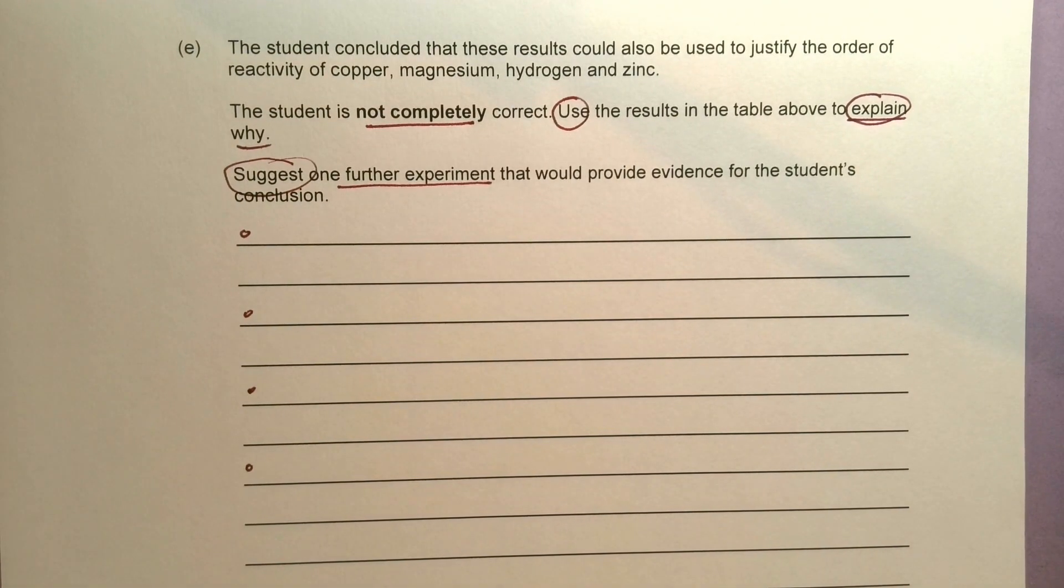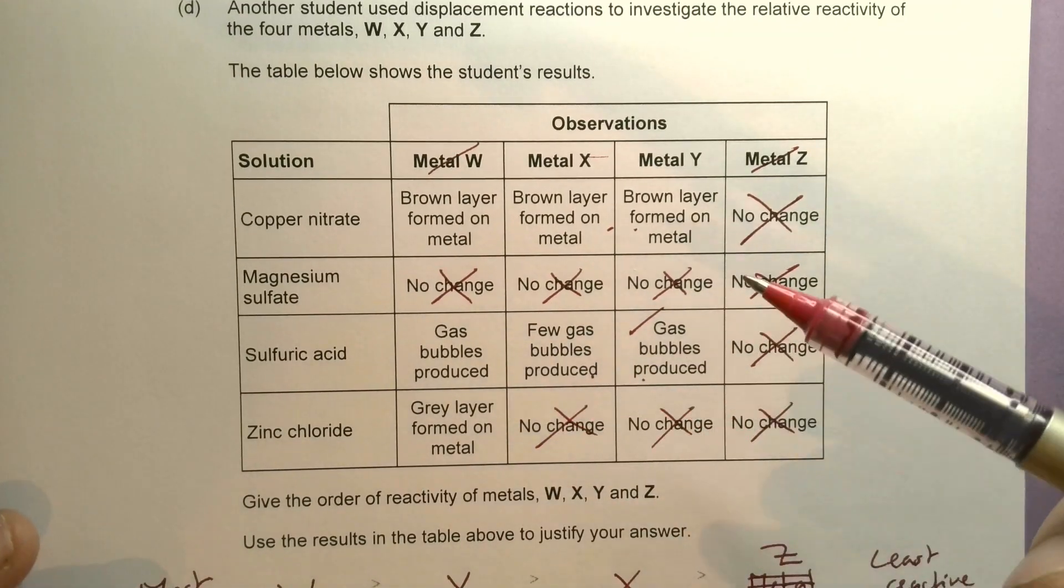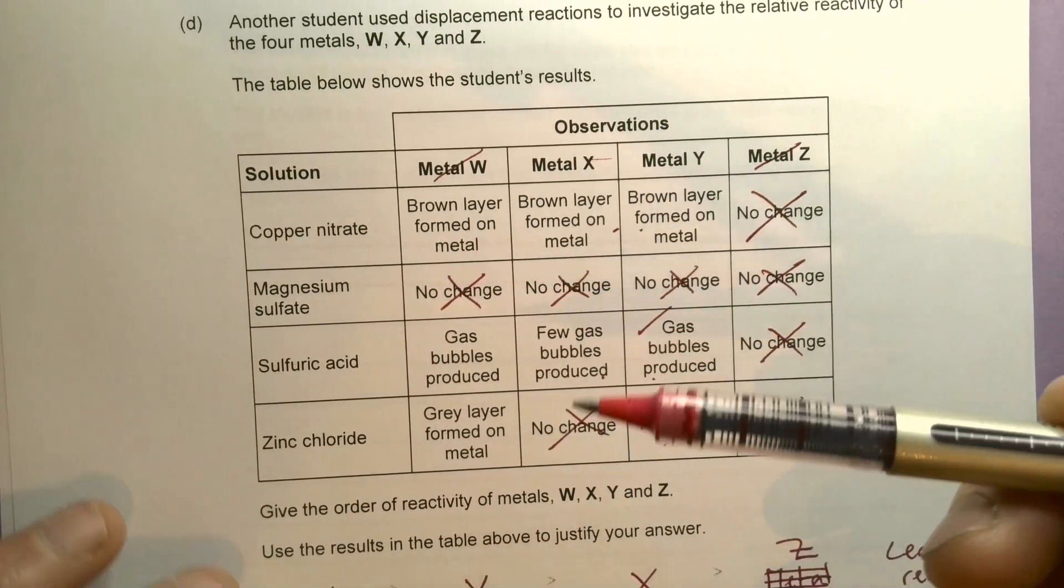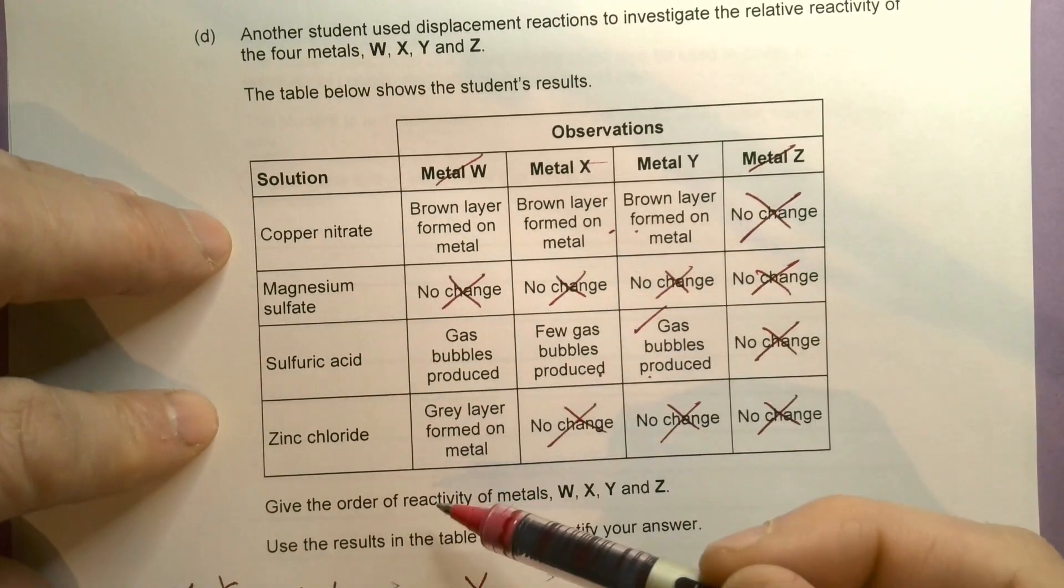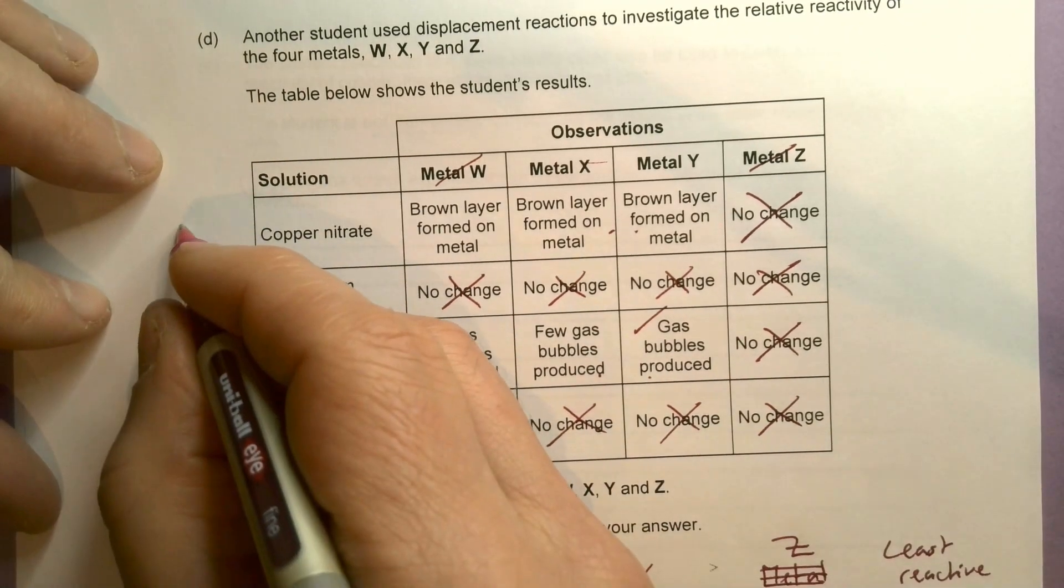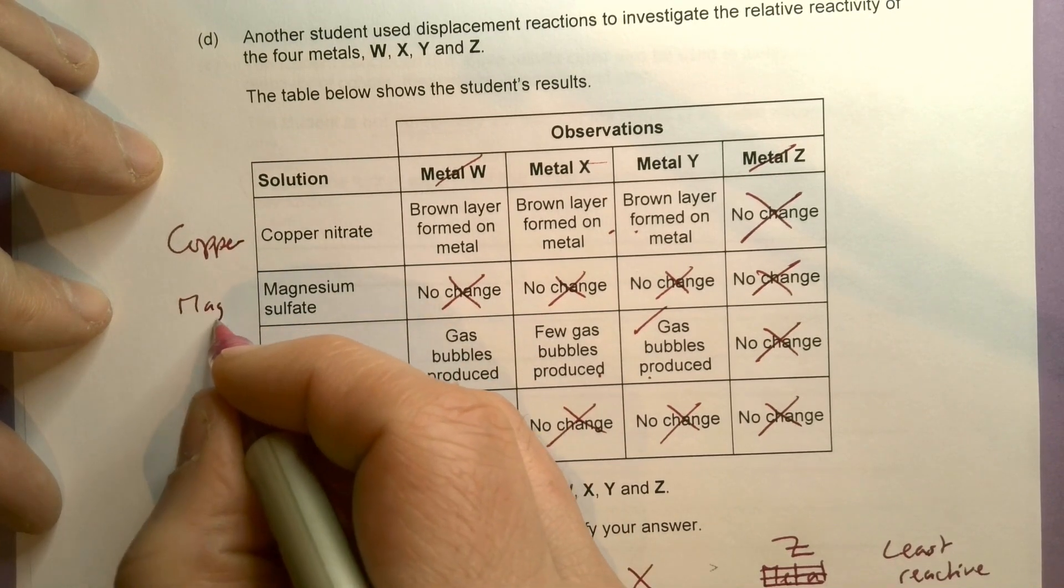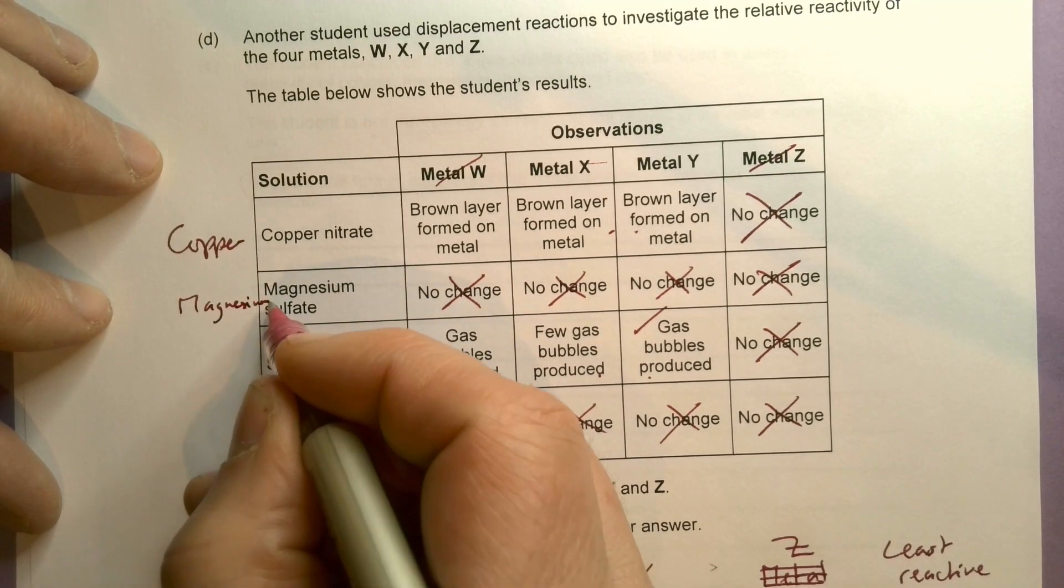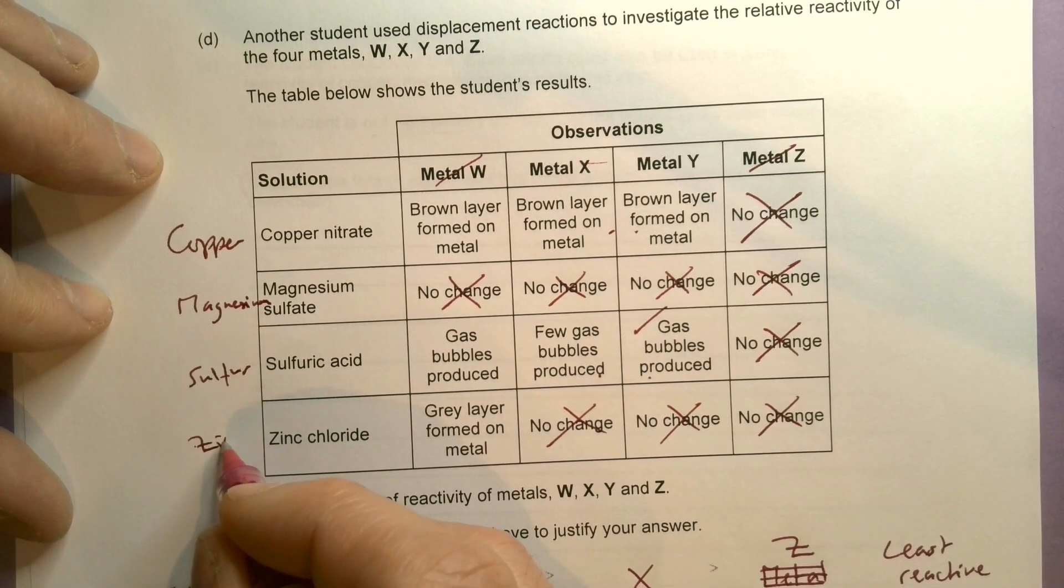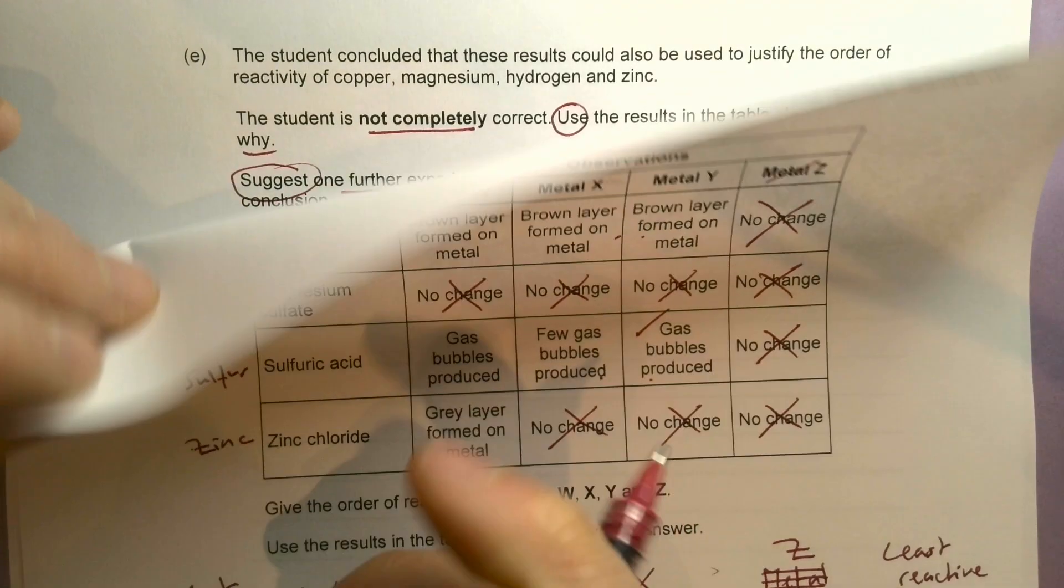They think the student thinks they can put these in the right order. Which one is going to be the most reactive? We've got copper, magnesium, sulfuric acid, hydrogen, and zinc.